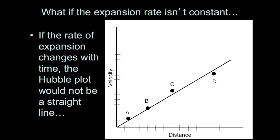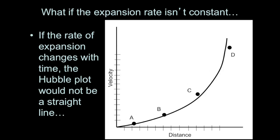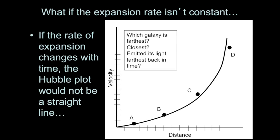What if the expansion rate of the universe isn't constant — what if it changes over time? In that case, we wouldn't have a straight line for the Hubble plot; instead, the line would be curved. We can still ask which galaxy is closest or farthest and which emitted its light furthest back in time. The answers remain the same: A is the closest, D is the farthest, and D emitted its light furthest back in time.